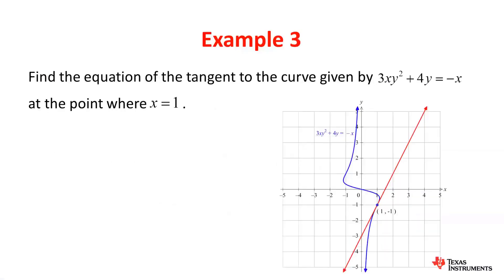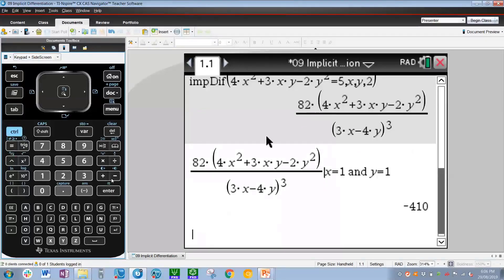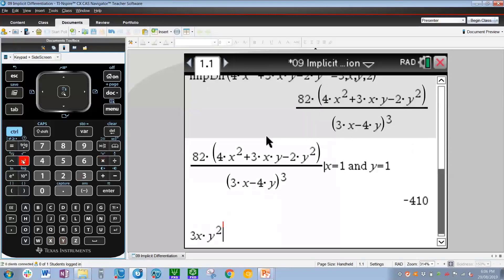Moving on to the final example: our job is to find the equation of the tangent to the curve given by 3xy squared plus 4y equals negative x, at the point where x equals 1. The first thing to notice is that only an x coordinate is given, not a y coordinate. Since dy/dx for implicit differentiation typically involves both x and y, we need to first find the y value at this point. We type in the equation — being careful to include a multiplication sign: 3x times y squared plus 4y equals negative x — and substitute in x equals 1.